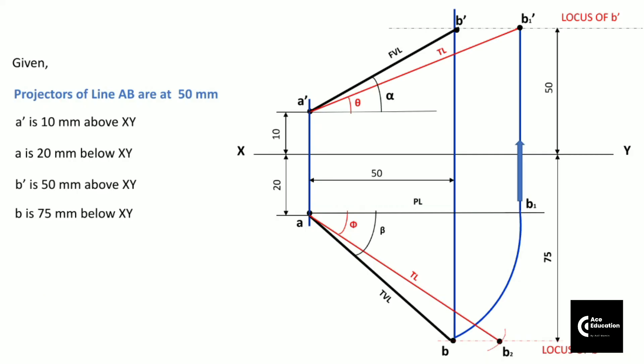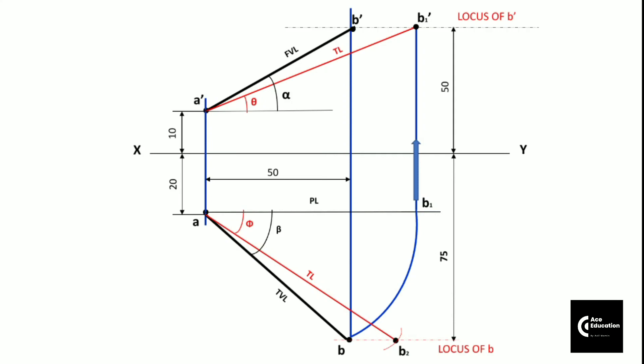After measuring this true length and the angles theta and phi, you can check your answers. The true length is given 84mm, theta is 28 degrees, and phi is 41 degrees.